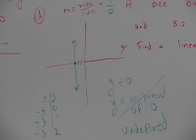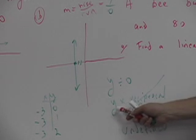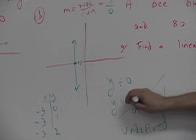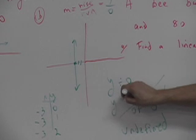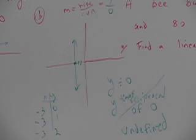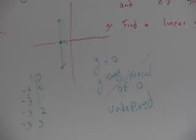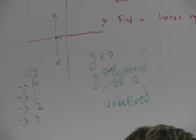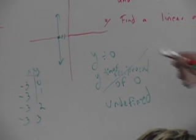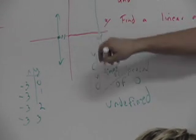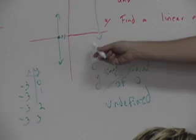Moira, you had a comment — more of a question? What is y? This is x. Y times — I guess you should put the word times — y times the reciprocal of zero is undefined. You can't multiply by the reciprocal of zero. You can't have y divided by zero. Rise over run is y over zero, and you can't do that.